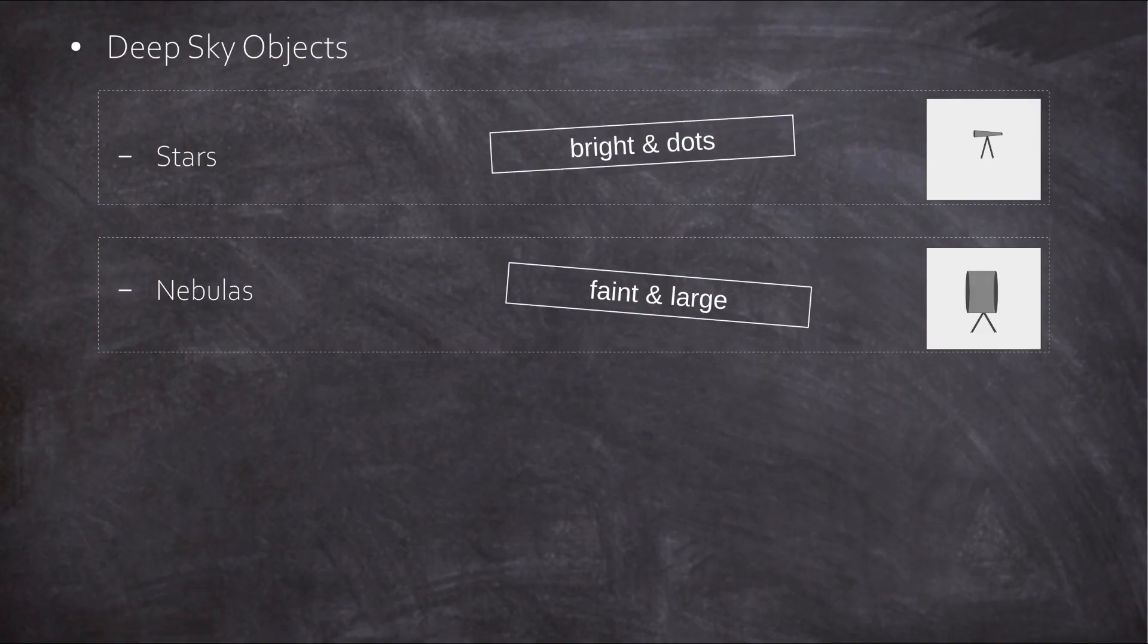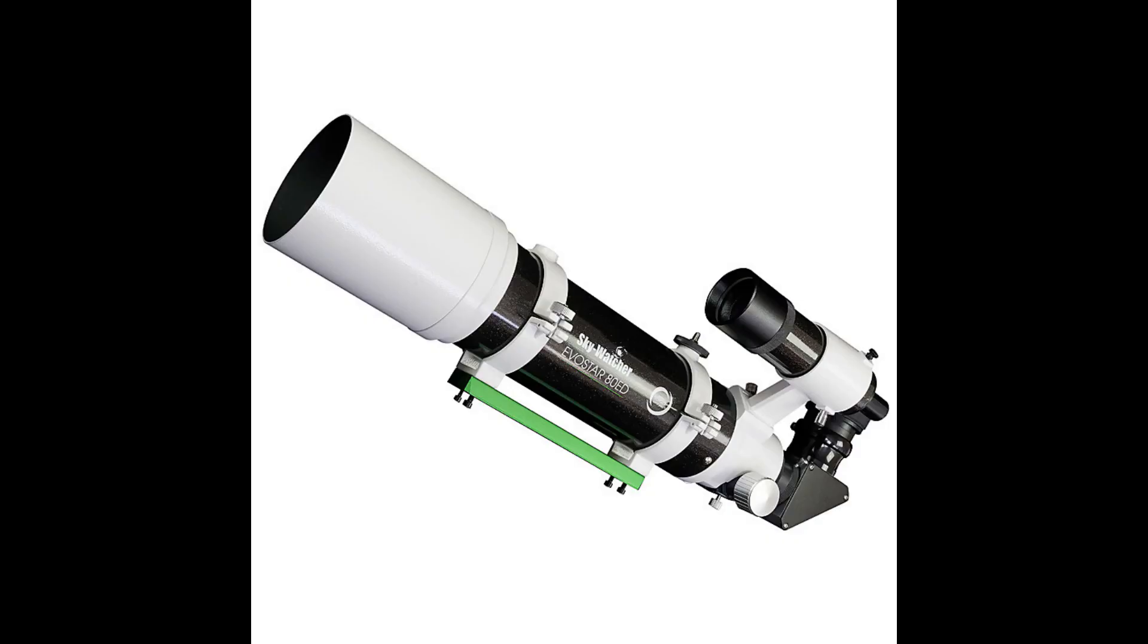So what's the best scope to observe nebulas? Firstly, they're faint. Therefore you need a scope as wide as possible. But don't worry, for long astro-imaging sessions an 80mm scope can do the job. All you need then are longer exposures.